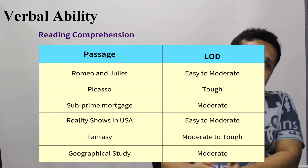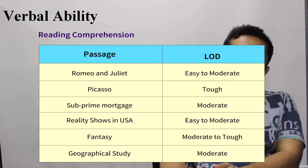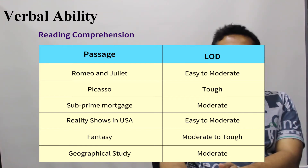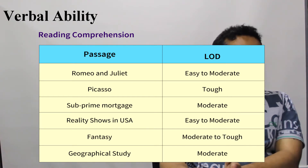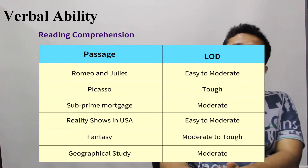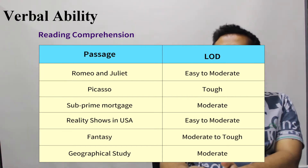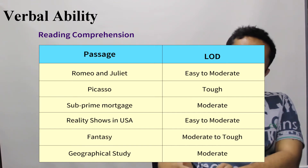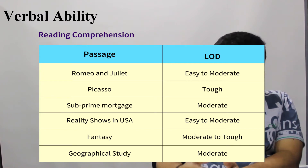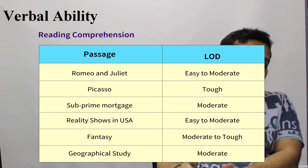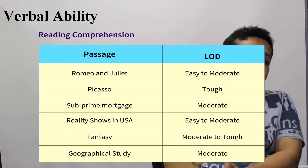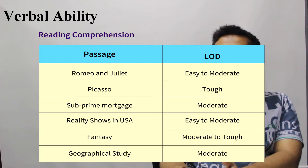The 24 RC questions were split into 6 RCs — when we have 6 RCs, that implies 2 six-question RCs and 4 three-question RCs. There were two relatively easy RCs: the first was a shorter one on Romeo and Juliet, slightly inferential but doable, and the second was a longer RC on reality shows in the USA — shame-based shows — which was quite easy. These two sets you should have definitely attempted. Then there were two moderate RCs: one on subprime mortgage and the lending crisis, and one on geographical studies.